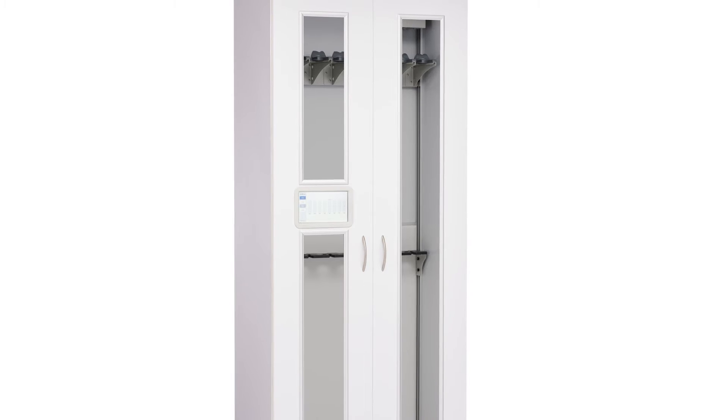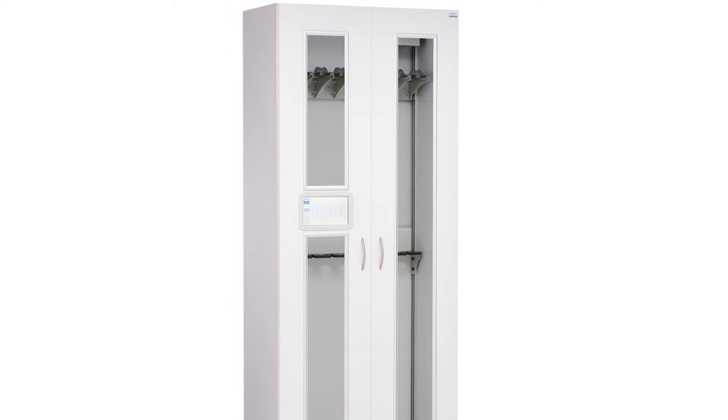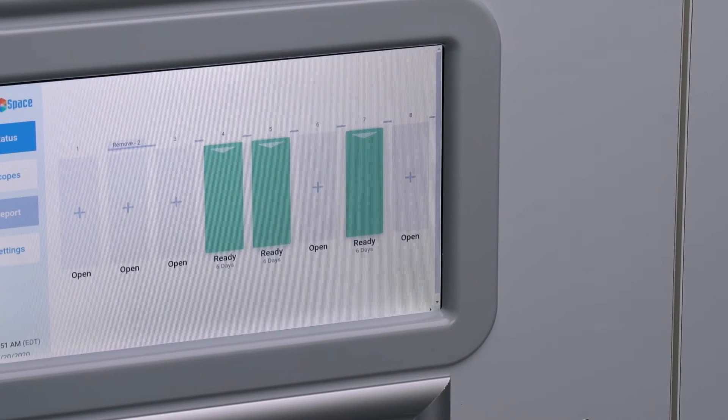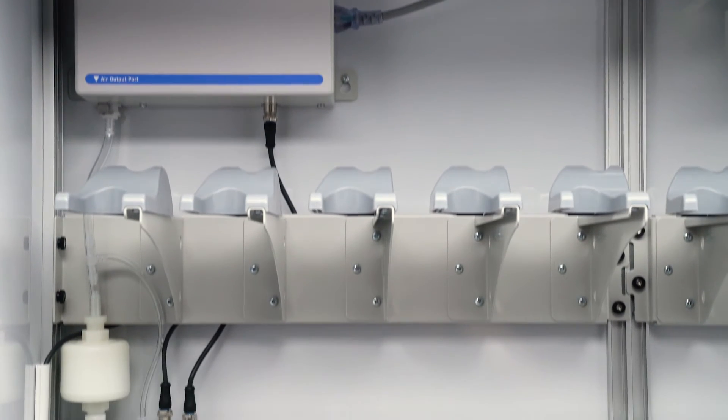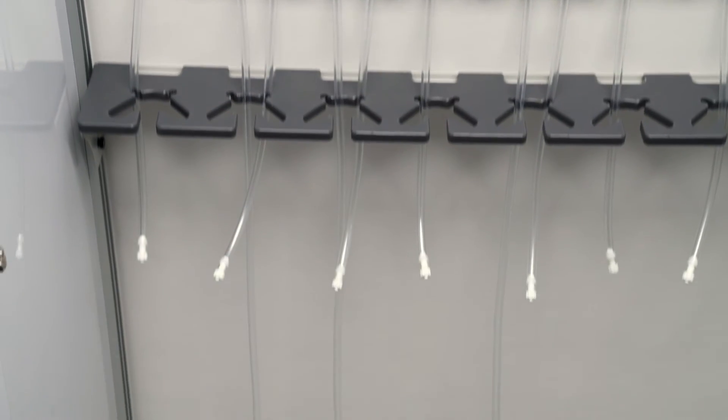The Ventair line also includes a scope tracking cabinet and offers a cost-effective, efficient way to monitor scope storage and both drying and tracking and tracking retrofit units that are installed in existing Innerspace Evolve scope cabinets.